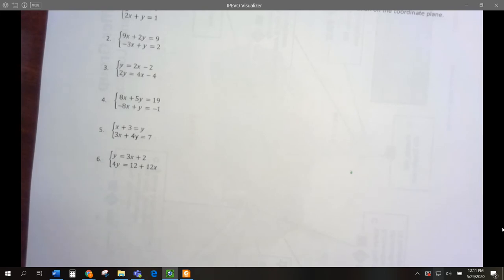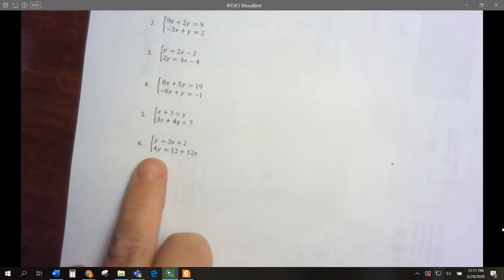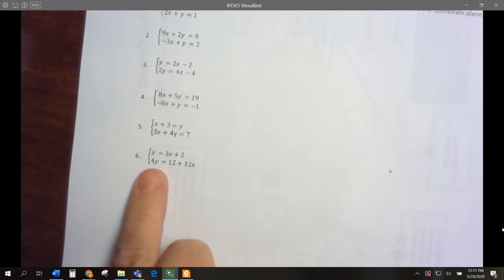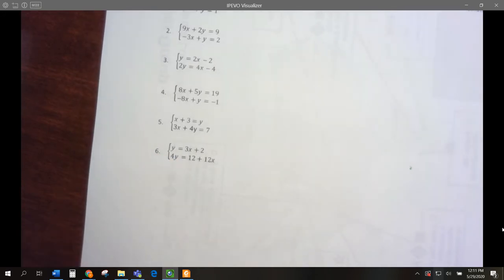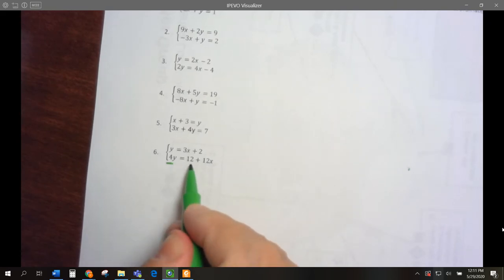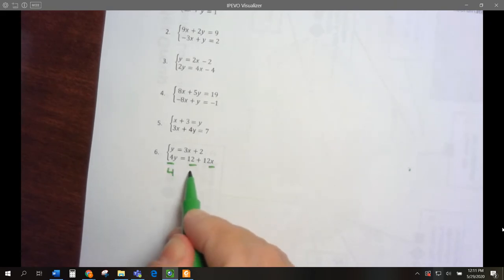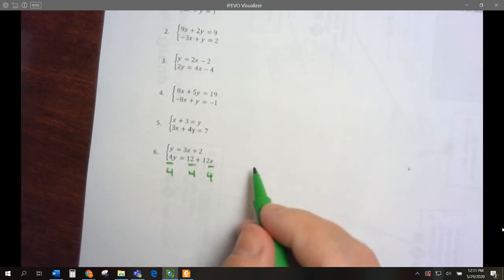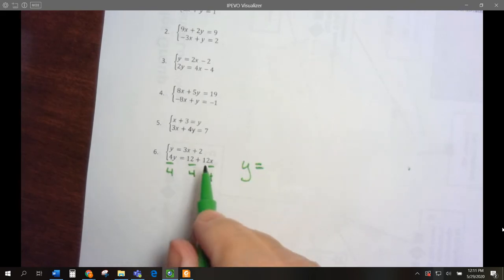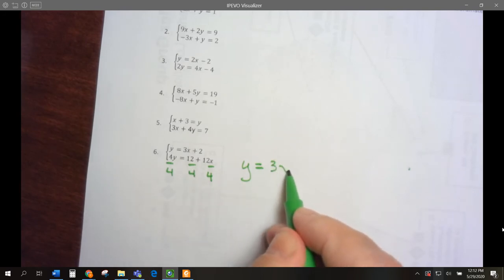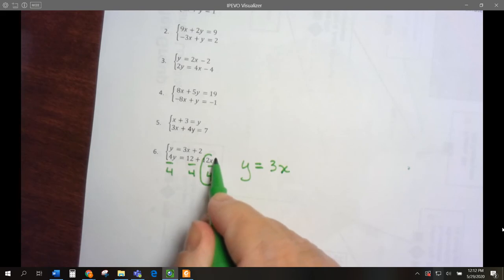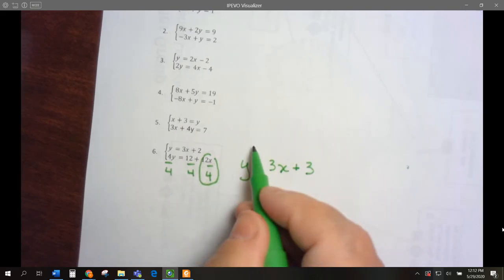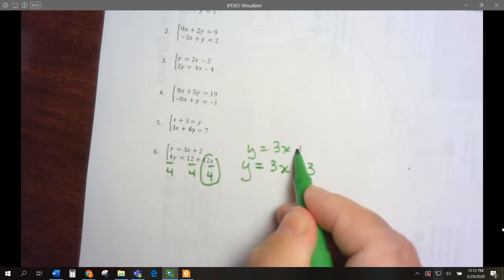Let's go on now to problem number 6. They're both in slope-intercept form, but this one is not simplified all the way because we have 4 y's and we only want 1 y. So let's divide everything by 4 here. 4 divided by 4 is y, just 1 y. 12 divided by 4 would be 3x plus 12 divided by 4 is 3. And this is y equals 3x plus 2.